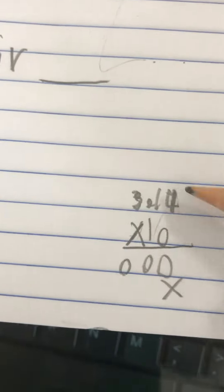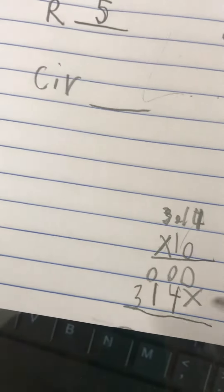Then 1 times 4 is 4, then 1 times 1 is 1, then 1 times 3 is 3.